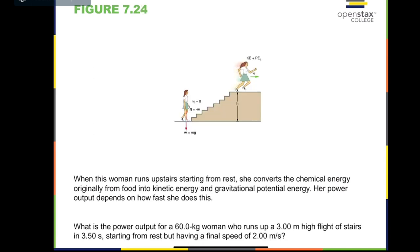Let us make a simple calculation of the power this woman needs to run upstairs in the figure. Keep in mind that work is a method of transferring energy. This woman starts with zero kinetic energy and zero potential energy relative to the ground. But finally, she ends with non-zero kinetic energy and non-zero gravitational potential energy.